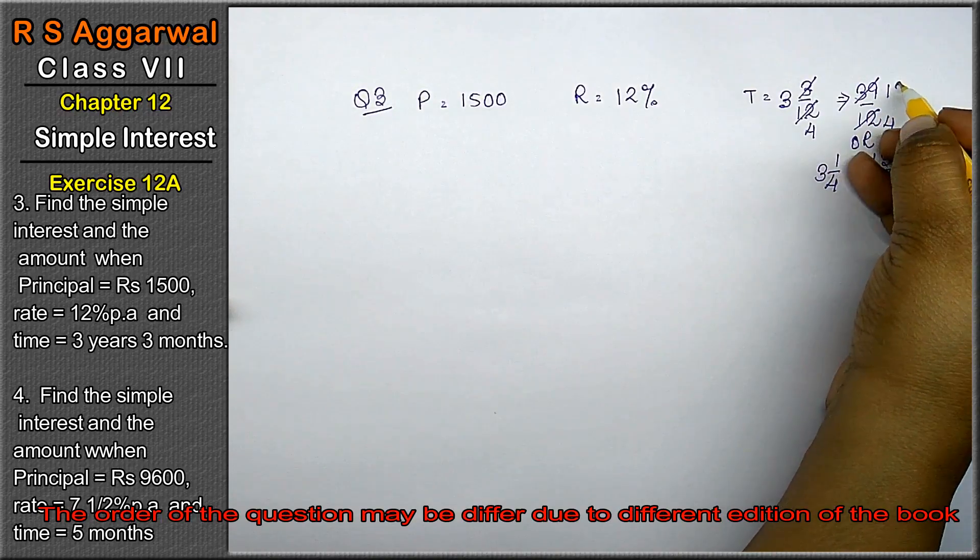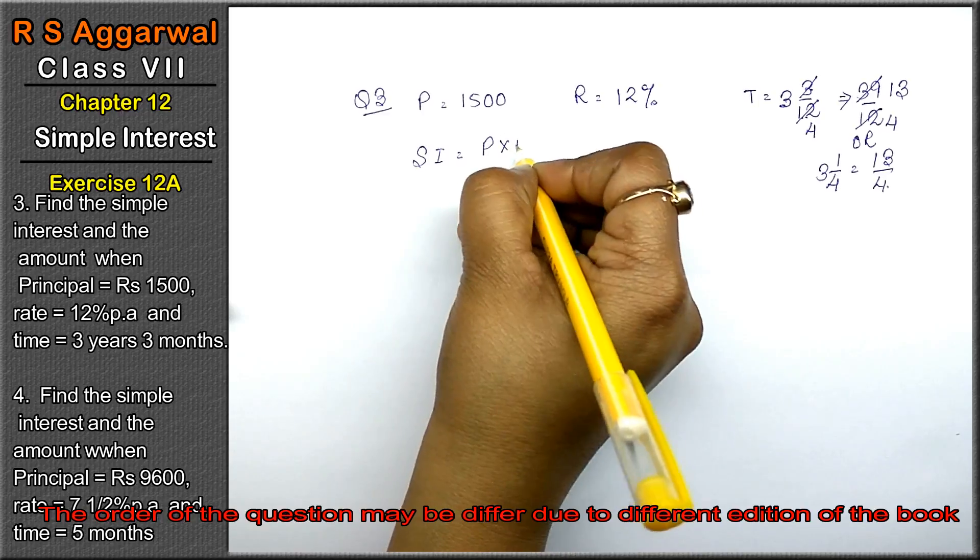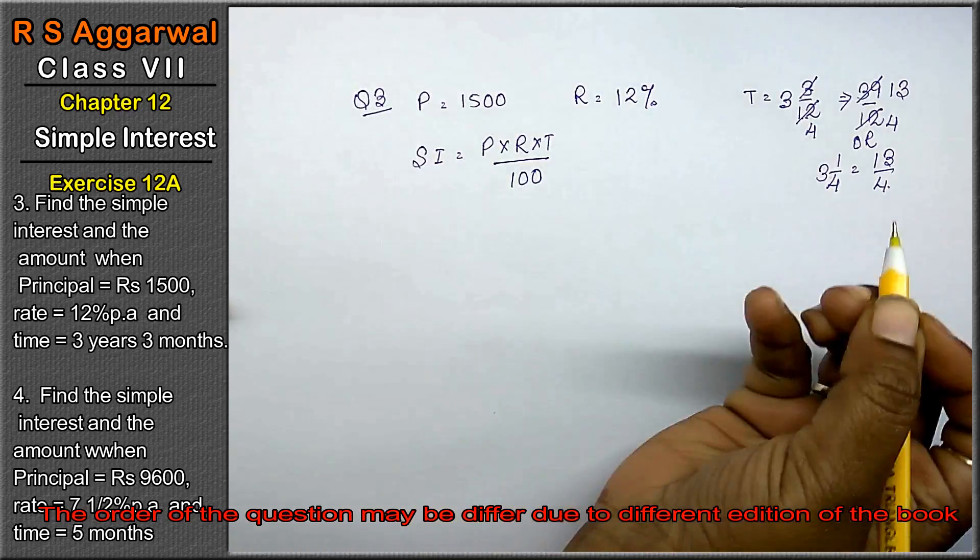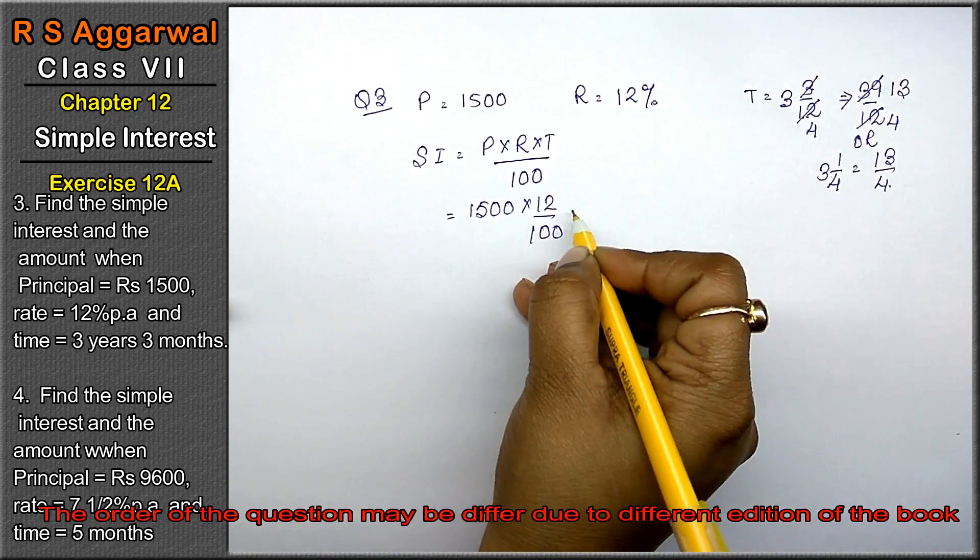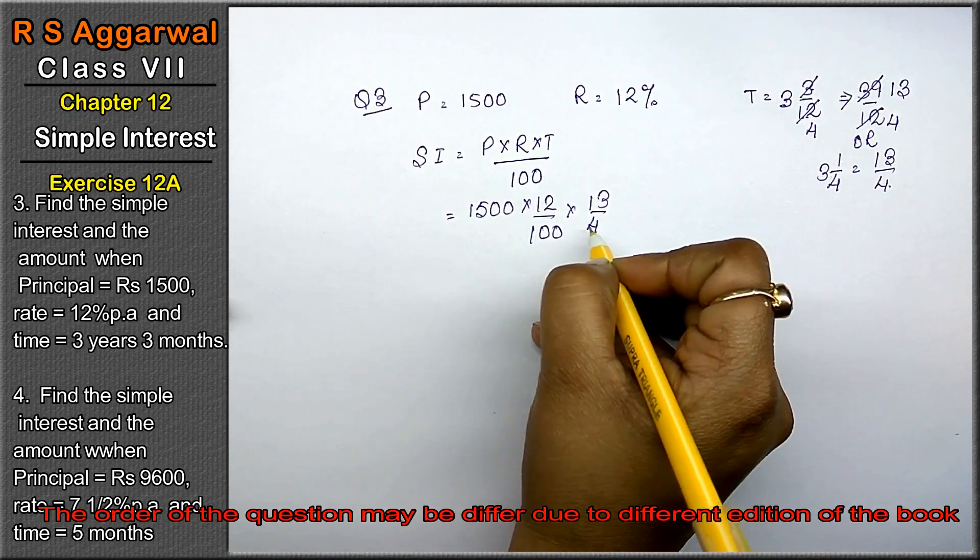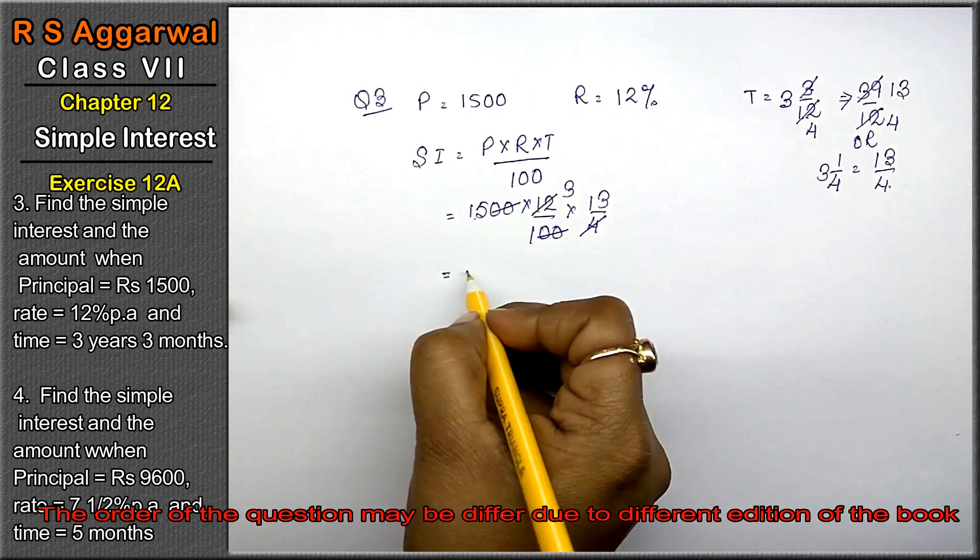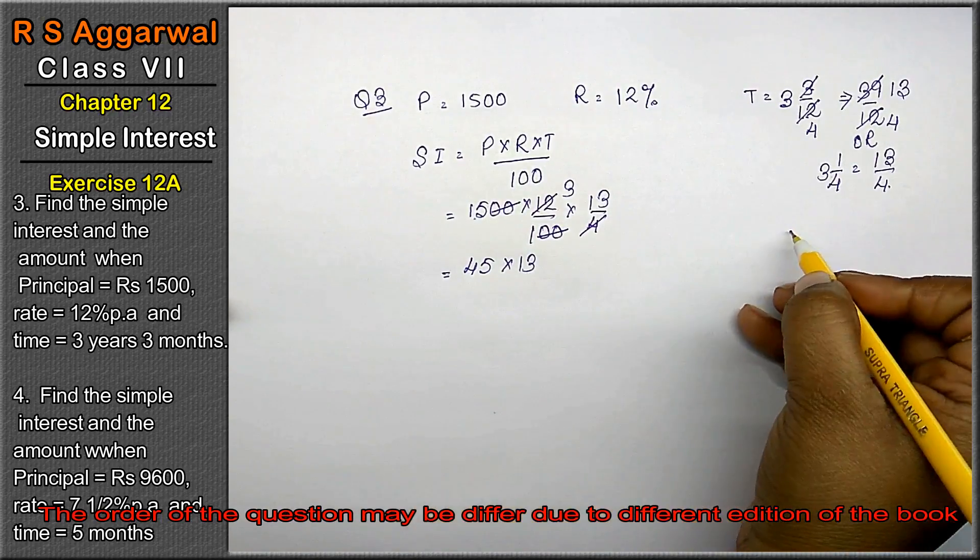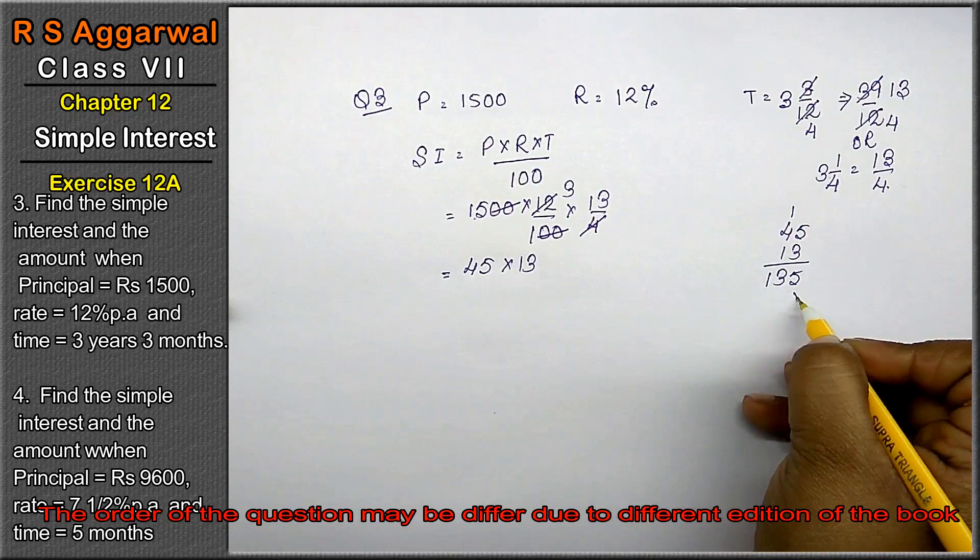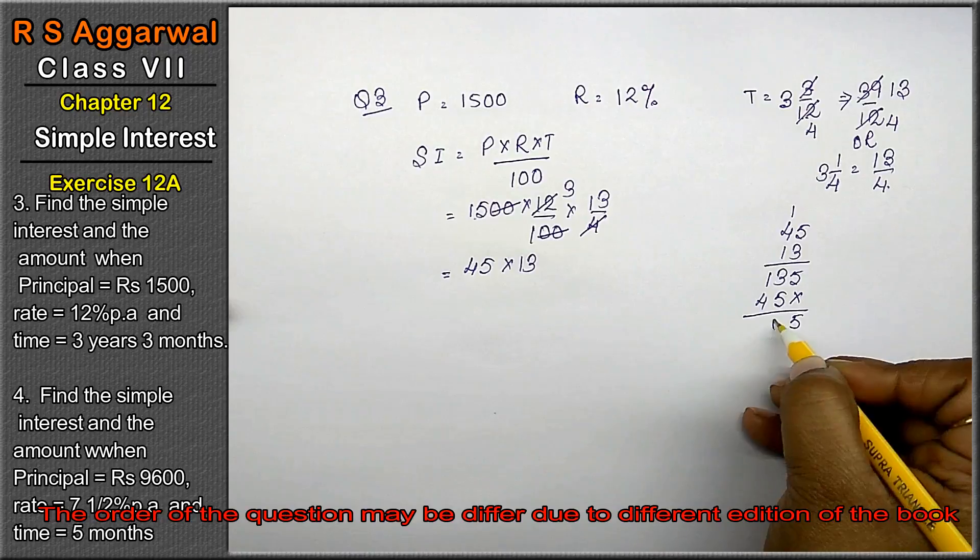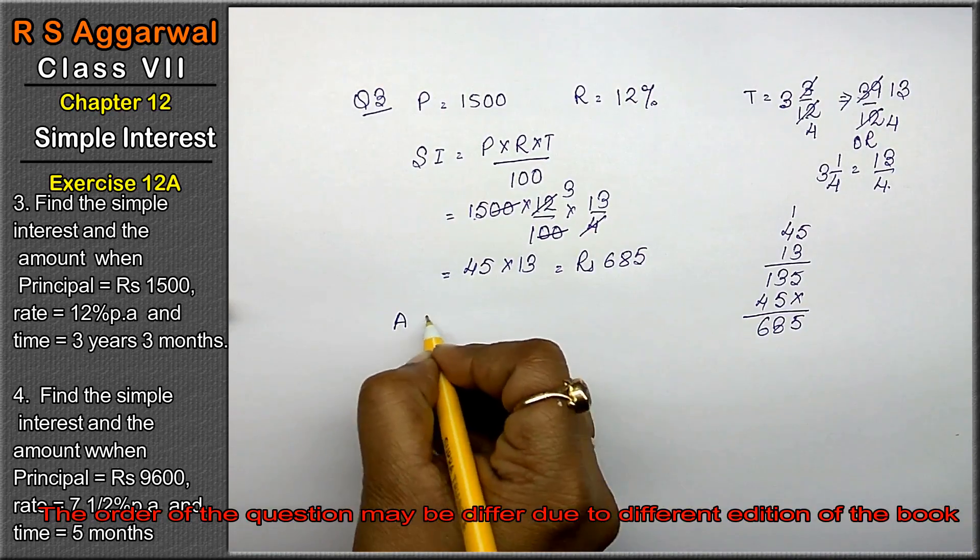Now simple interest formula: P into R into T upon 100. P value is 1500, R value is 12%, and T is 13 upon 4. Calculating: 15 into 13 equals 195, so 585. Rupees 585 is the answer.